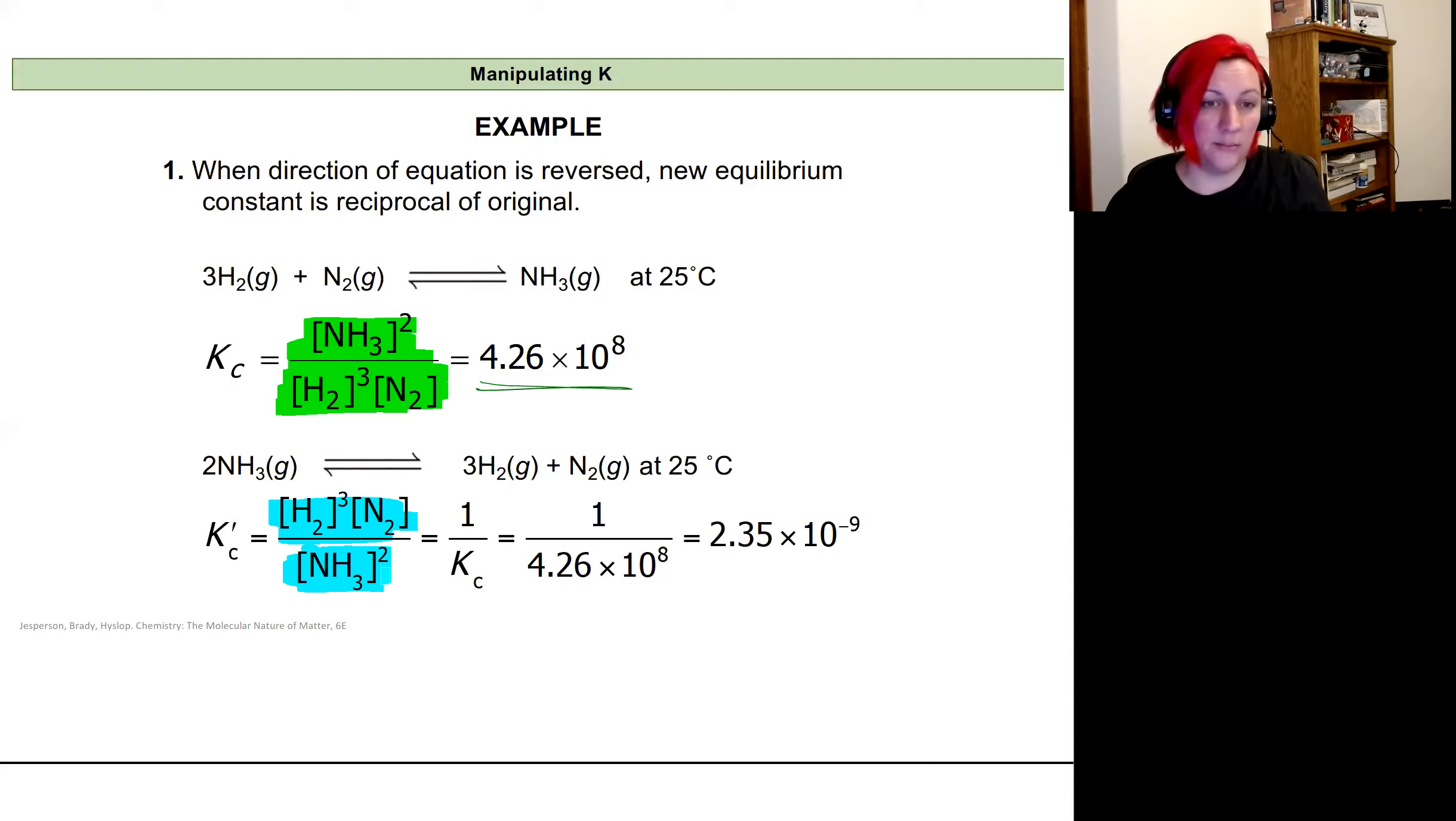If I want to know what the equilibrium constant would be and I know the value for the hydrogen and nitrogen combining to form ammonium, it's just going to be the opposite. So I take one over the value right here and I get this very small number, 2.35 times 10 to the negative nine.